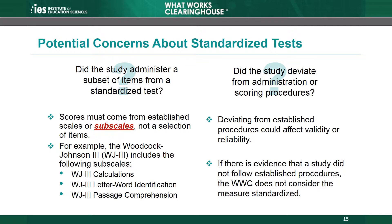A second issue that affects whether the WWC considers a test standardized relates to the administration of the measure. Even if a standardized test has established administration procedures, researchers may sometimes deviate from those procedures when administering the measure. This is a concern because the developer of the measure determined the properties based upon specific established procedures. If researchers deviate from those procedures, it may affect the validity and reliability of the measure. If the study contains evidence that the researchers did not follow the established administration procedures, the WWC does not consider the measure standardized.